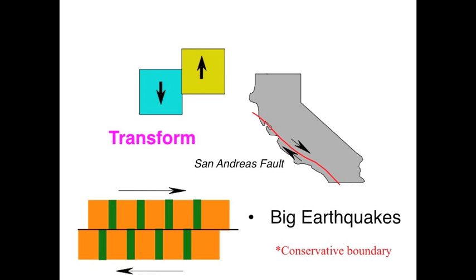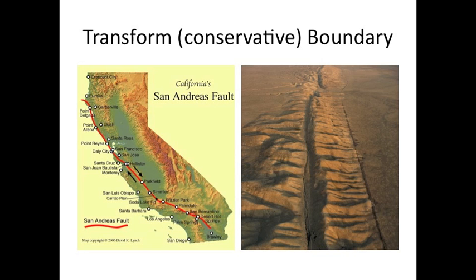Here is a real photo showing the California San Andreas Fault boundary, where the land has slid past each other, creating no mountain chains, no volcanoes.